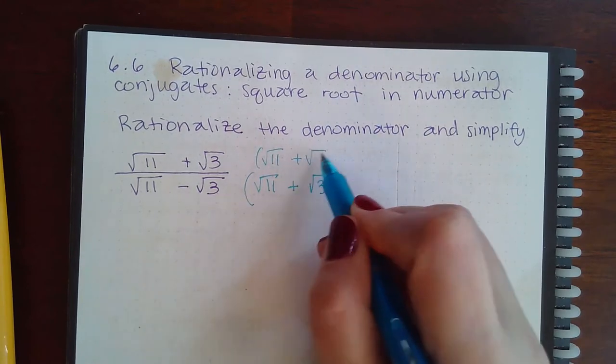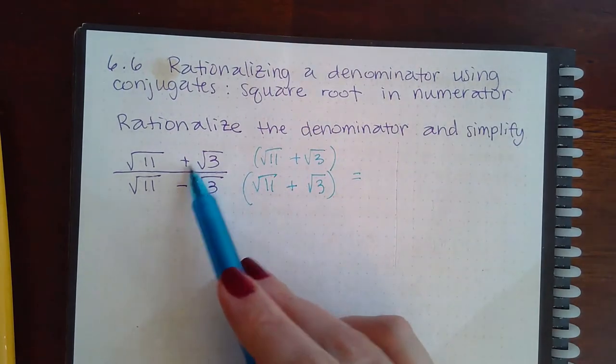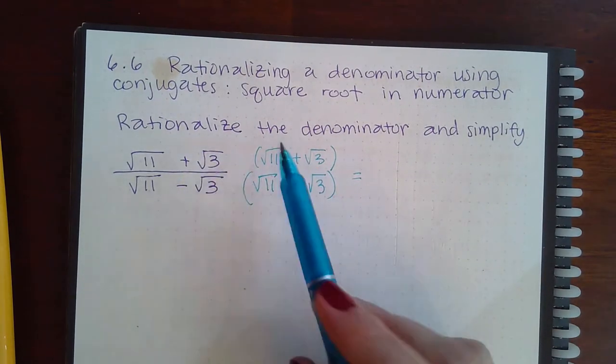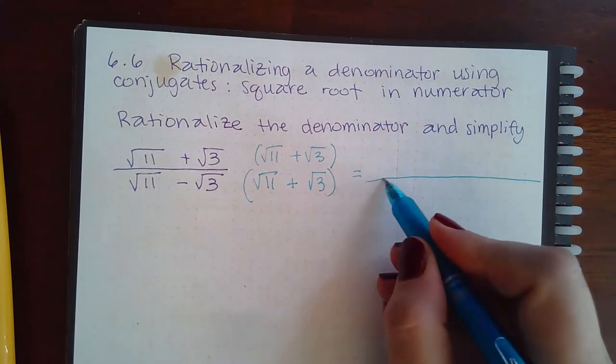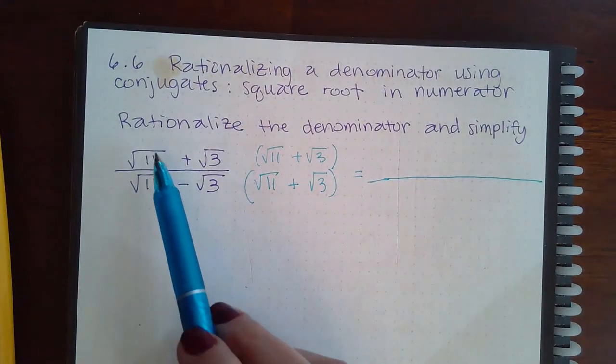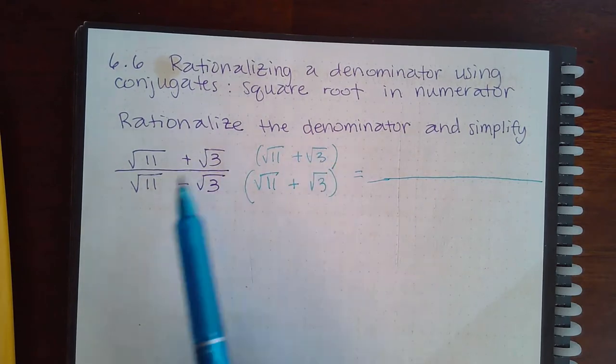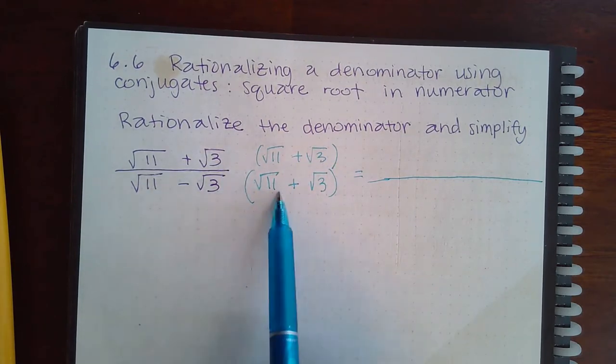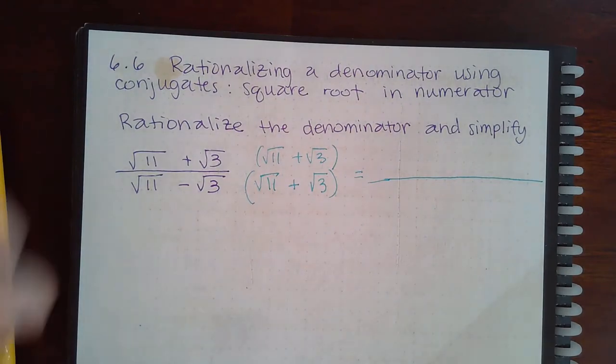It just happens to be a coincidence that the top is the same thing, but the mechanics of everything is going to work out the same as before. The difference here is that I have a binomial times a binomial on the top as well as a binomial times a binomial at the bottom. That means I'm going to have to FOIL both the numerator and FOIL the denominator.